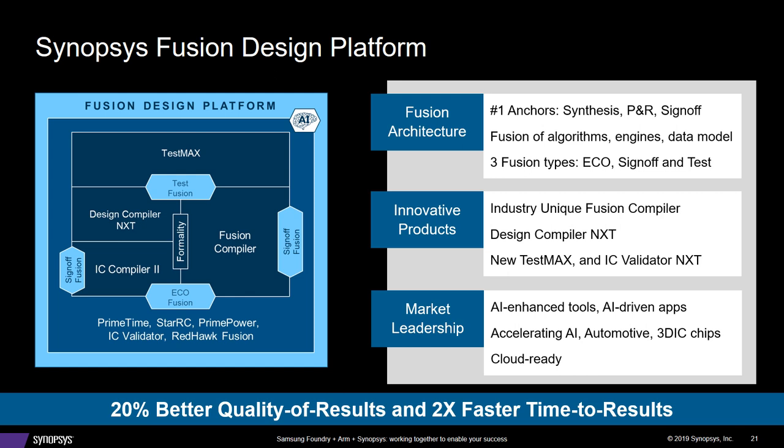At the very end of the flow, we have several fusions, including Primetime and StarRC. Those are brought into Fusion Compiler directly, in design. And also ICV and Redhawk — Redhawk bringing in IRDrop, and ICV, of course, being DRC and LVS.